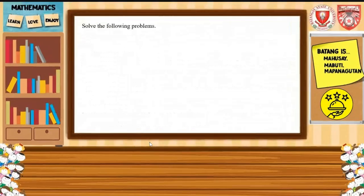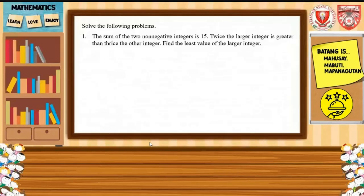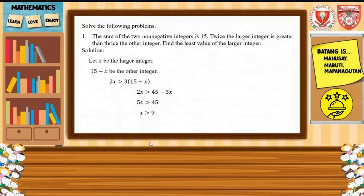Another example: the sum of two non-negative integers is 15. Twice the larger integer is greater than thrice the other integer. Find the least value of the larger integer. Let x be the larger integer and 15 minus x be the other integer. Since twice the larger integer is greater than thrice the other, we write: 2x is greater than 3 times (15 minus x).